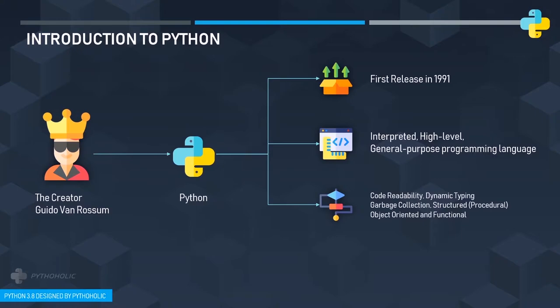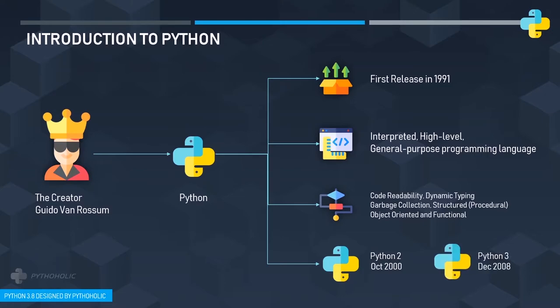A major advantage of Python is that the code is easily readable. It is also dynamically typed, meaning the type-checking of a variable is done at runtime rather than at compile time. Python also has inbuilt garbage collection and supports procedural, object-oriented, and functional programming. The first version of Python 2 was released in October 2000, and Python 3 — which we will be working with in this series — was released in December 2008.